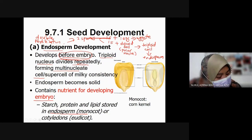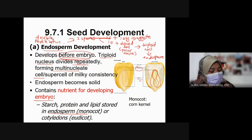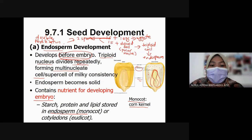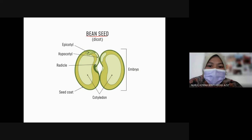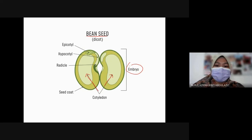For monocots, we call it endosperm — the large area visible in corn (jagung), for example. The embryo is inside the endosperm. For dicots, we don't call it endosperm but cotyledon. Example: the green bean (kacang hijau) is a dicot plant. The whole structure here is the embryo, and this part is the cotyledon. For dicots, cotyledon is used instead of endosperm.